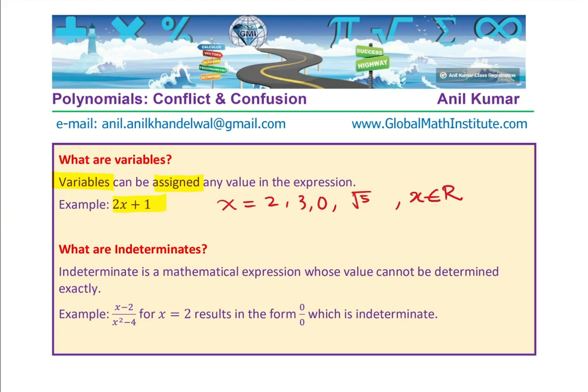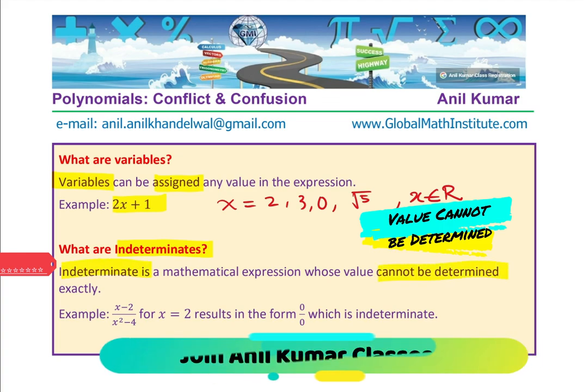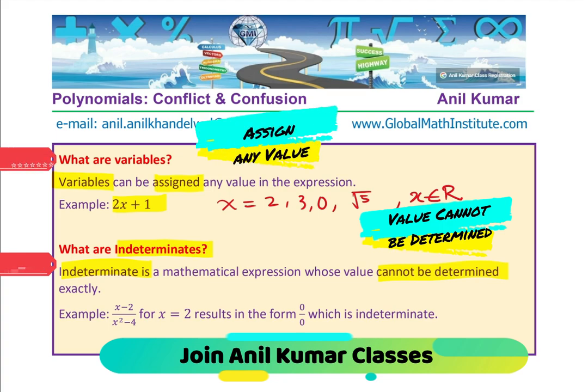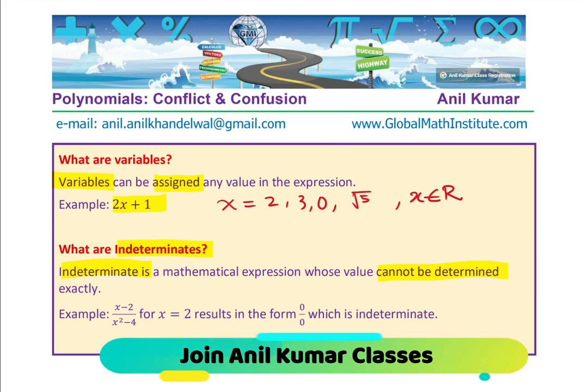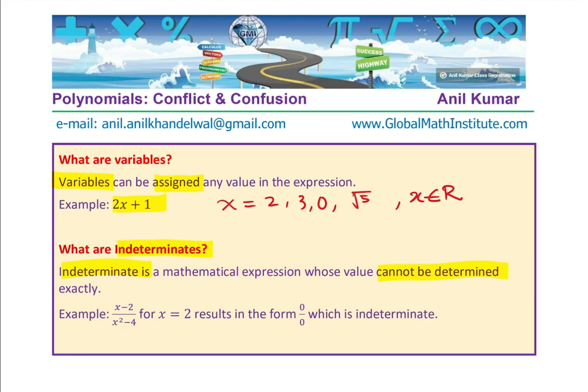Now on the other hand, what are indeterminates? As the name suggests, indeterminate is a mathematical expression whose value cannot be determined. So indeterminate associates with the value which cannot be determined. Variable, you assign anything. It is already determined. What we can assign? We can assign 5, 6, 7, any number to a variable. But for indeterminate, you cannot find the value of the expression. And indeterminate is an expression, not just a variable.